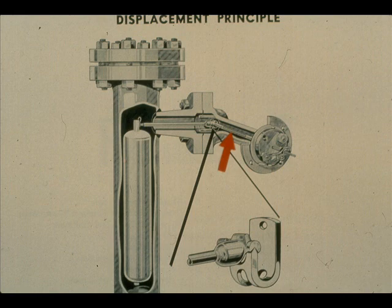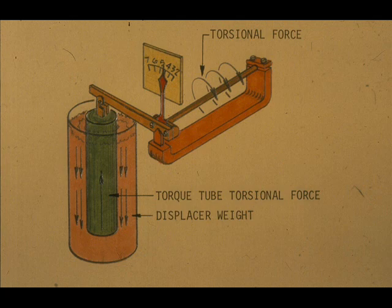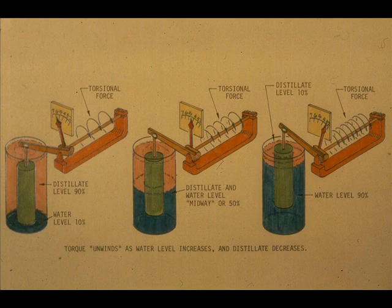Notice there are no scales to support the displacer. There is, however, an element that does the same thing. It is called a torsional spring or torque tube. The displacer always pulls down as its weight opposes the torque. And when the displacer is completely submerged in water, it still pulls down opposing the torque. The torque tube twists a specific amount for each increment of buoyancy change.